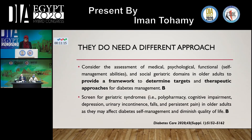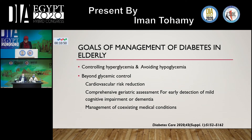Elderly people with diabetes do need a different approach. To achieve appropriate balance between glycemic control and risk for complications, it's important to carefully assess and reassess patients' risks for worsening of glycemic control and functional decline, through assessment of medical, psychological, functional, and social geriatric domains. We should also screen for common geriatric syndromes. The goals of management of diabetes in the elderly include controlling hyperglycemia as well as avoiding hypoglycemia.